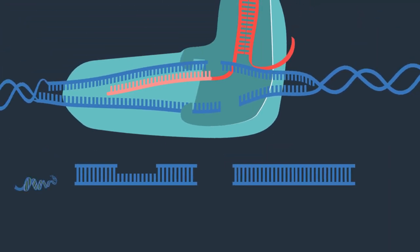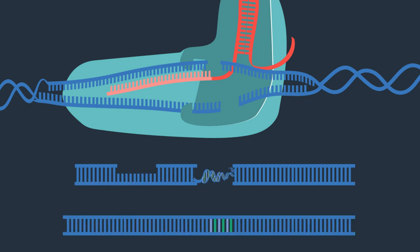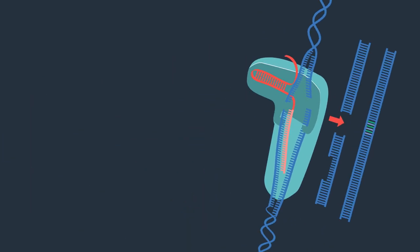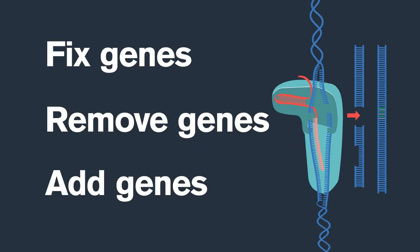But if scientists introduce a strand of DNA that they've designed, it could be used as the instructions to repair the damage. This means a new gene that wasn't there before could be made and added to the DNA. In this way, CRISPR-Cas9 has been used to fix genes, remove genes, and add genes.